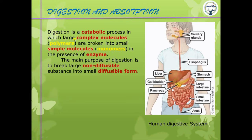Digestion is the opposite of polymerization. It is a catabolic process in which large complex molecules or polymers are broken into small simple molecules or monomers in the presence of enzymes. Enzymes are biological catalysts — substances that increase the rate of chemical reaction without themselves undergoing any chemical change.